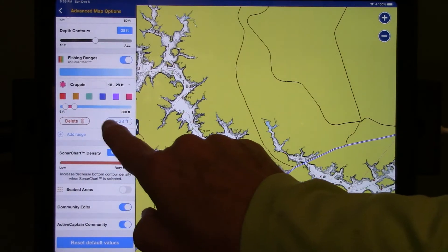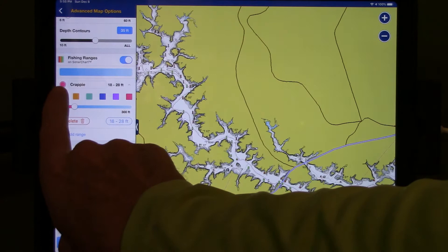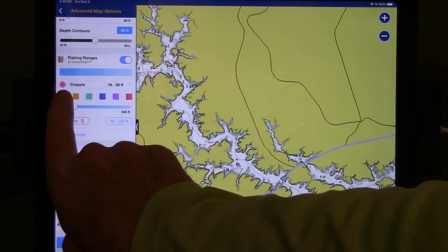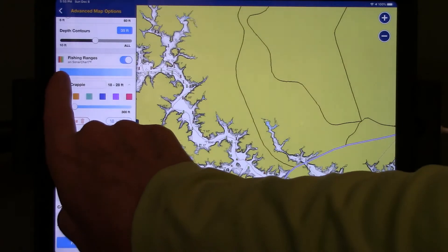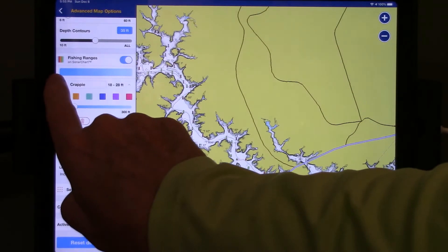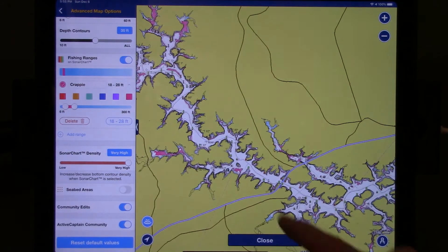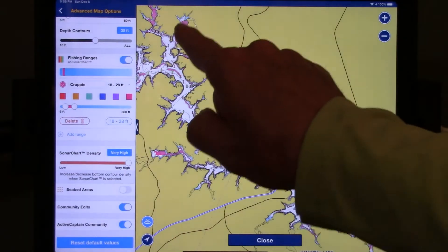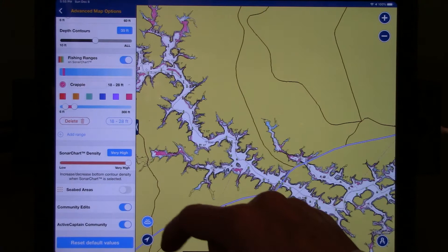Now, the way that I turn that option on is by touching this small red button to the left of the word Crappie. If I touch it, you'll see a check mark appear in that circle. You also note that part of the chart has already started to turn the red color that we've selected.